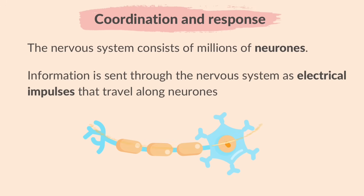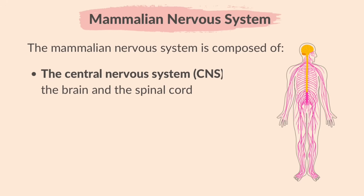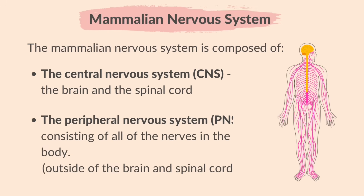Information is sent through the nervous system as electrical impulses that travel along neurons for quick communication. A bundle of neurons is known as a nerve. The mammalian nervous system is composed of the central nervous system, which consists of the brain and the spinal cord (shown in yellow), and the peripheral nervous system, consisting of all of the nerves in the body outside of the brain and the spinal cord (shown in pink).